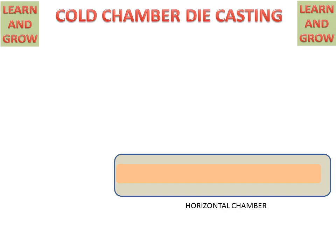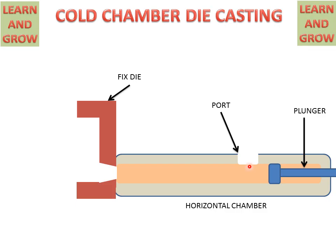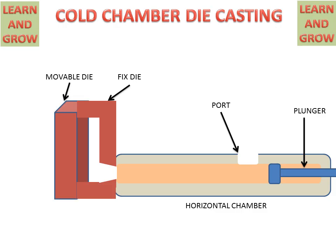There is a passage for molten metal, a plunger for forcing the molten metal to the die cavity, and a port for feeding molten metal. There is also a fixed die with a passage for the molten metal, and a movable die which moves in the forward or backward direction.